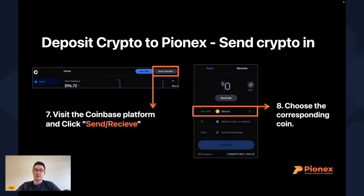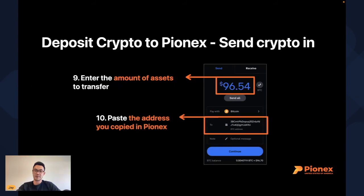After you copy the address, go to the Coinbase platform. In the top right corner, click Send/Receive. A window will pop up — under Send, select your currency (Bitcoin in this case), type in the amount you want to transfer, and then paste the address you copied from Pinex in the previous step.